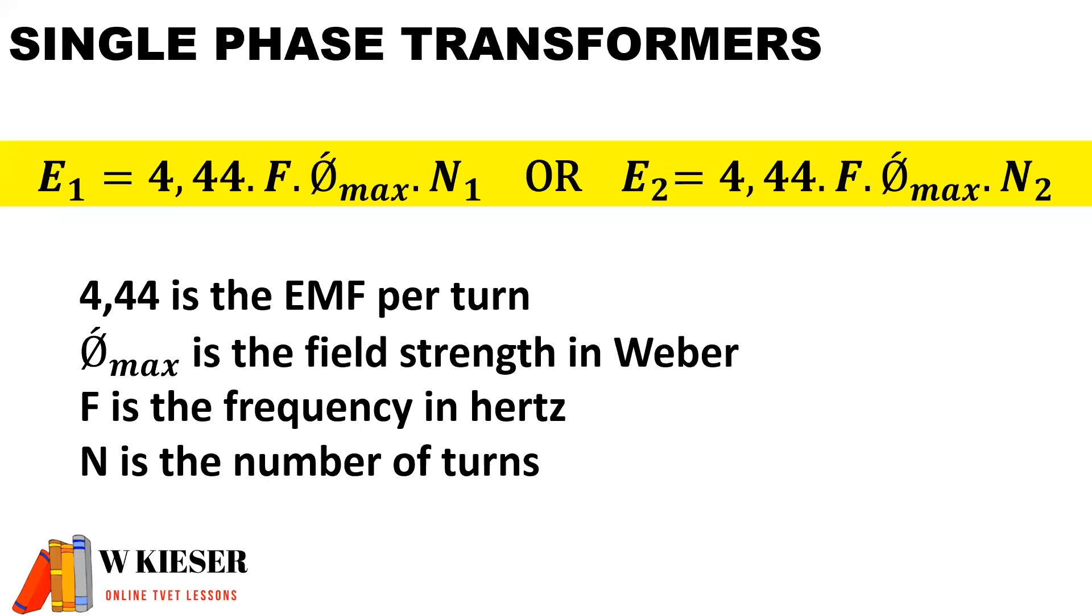In the equations we're going to be using for our stacking factor and calculations for single-phase transformers, you'll notice that the EMF on the primary side is equal to 4.44 multiplied by the frequency of 50 hertz, normally 50 hertz but it could change, and then we have the maximum flux per pole in Weber, and then we have the number of primary turns.